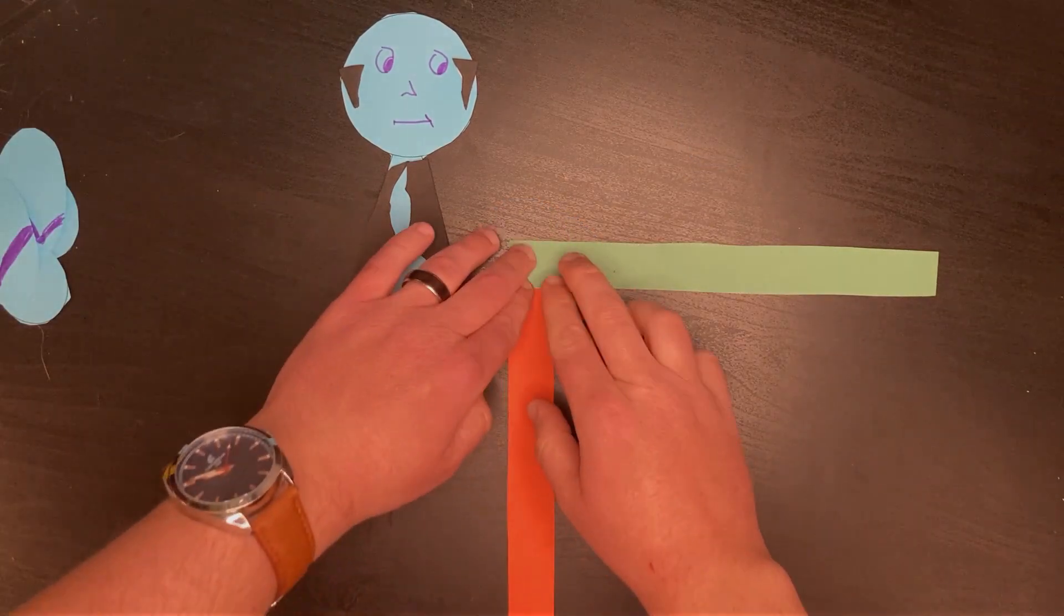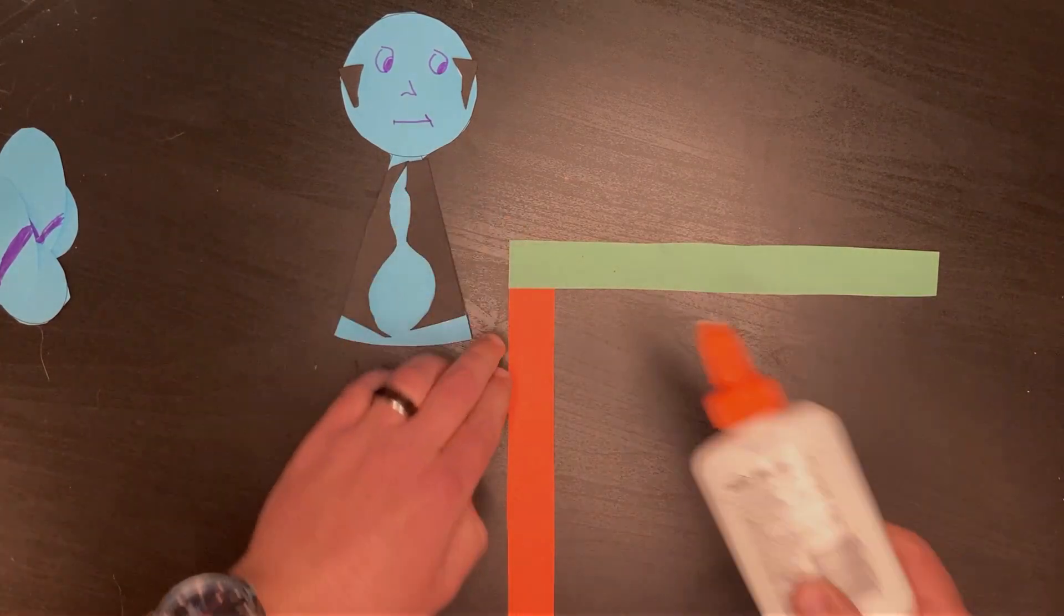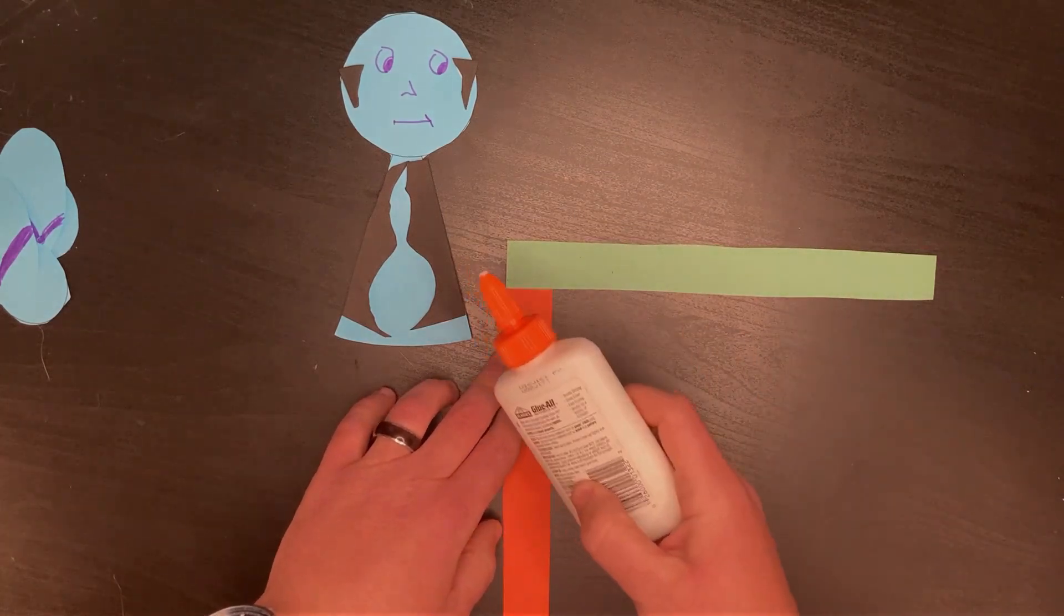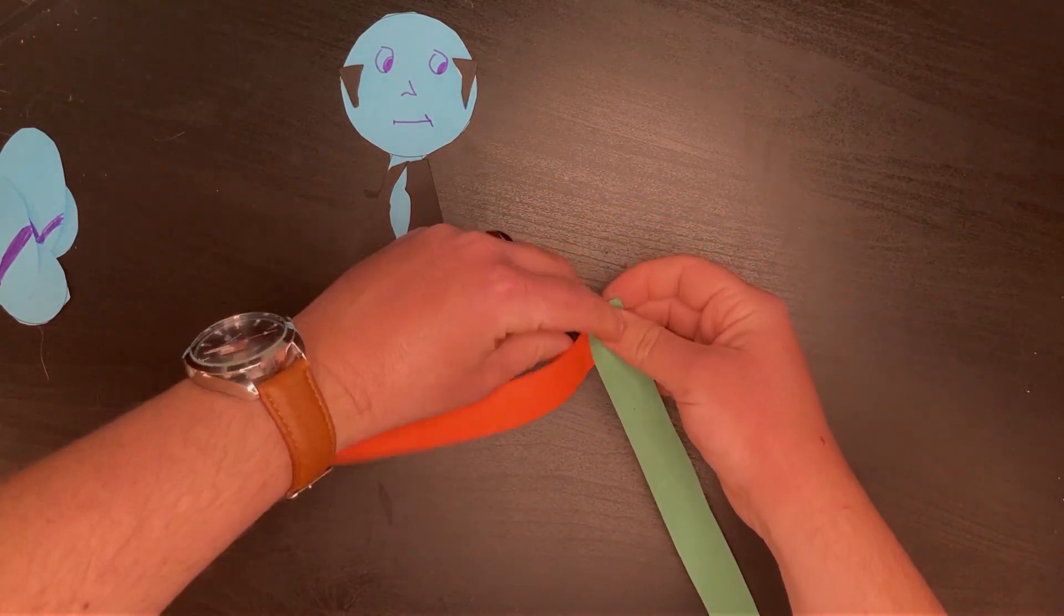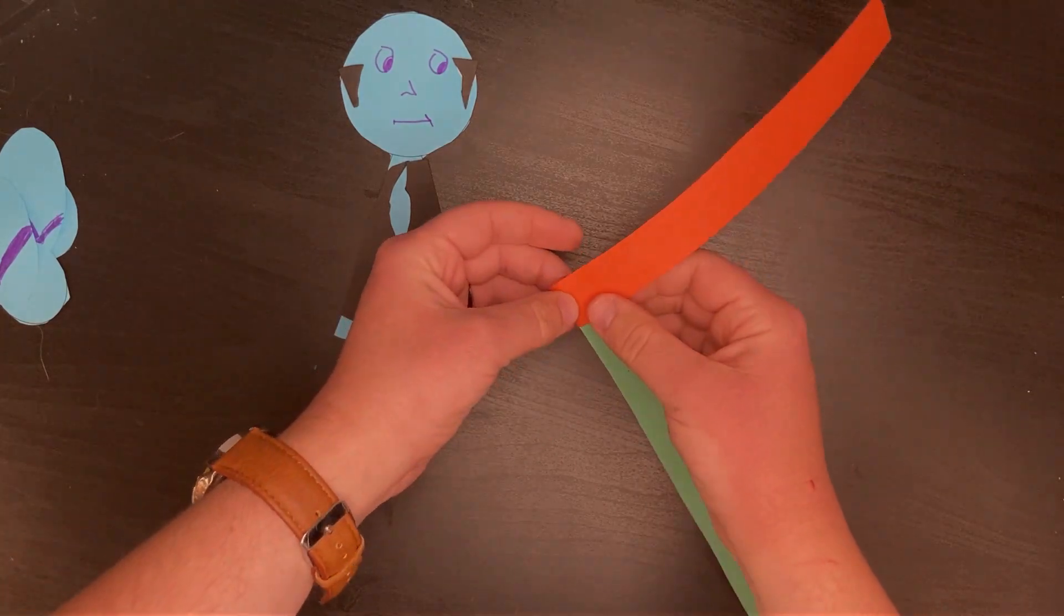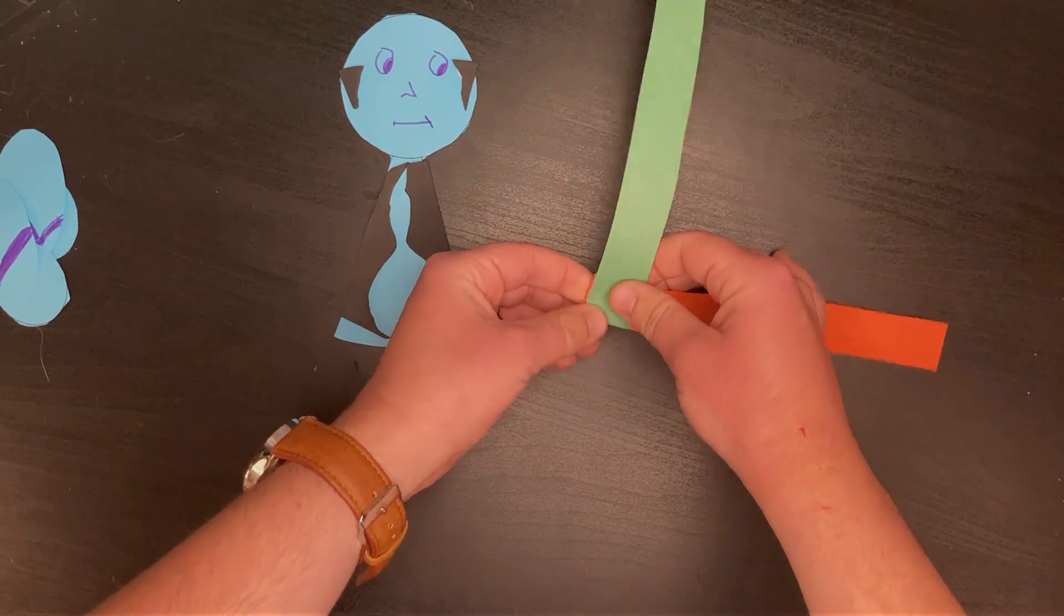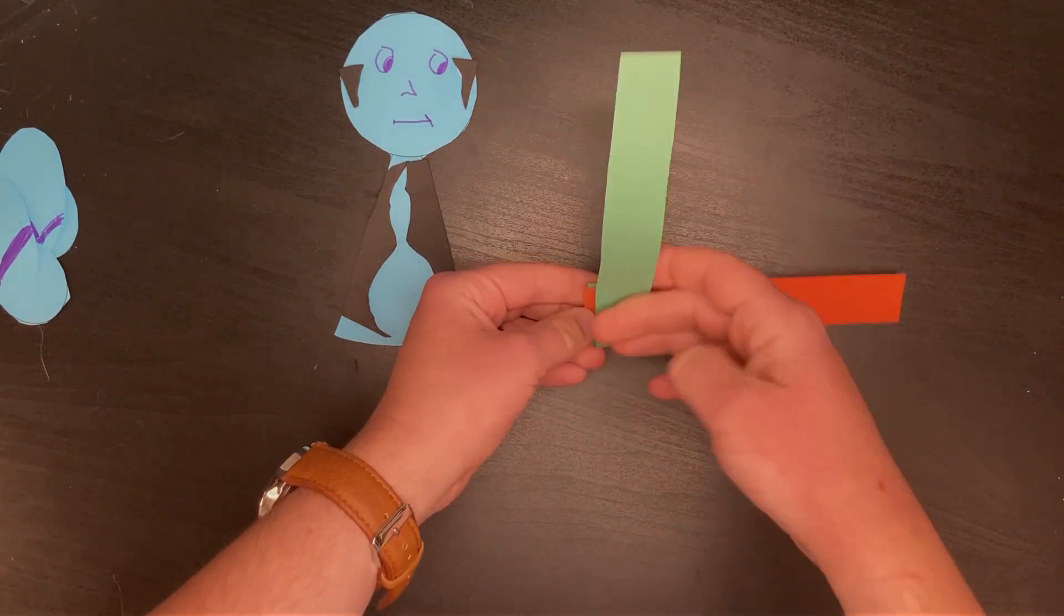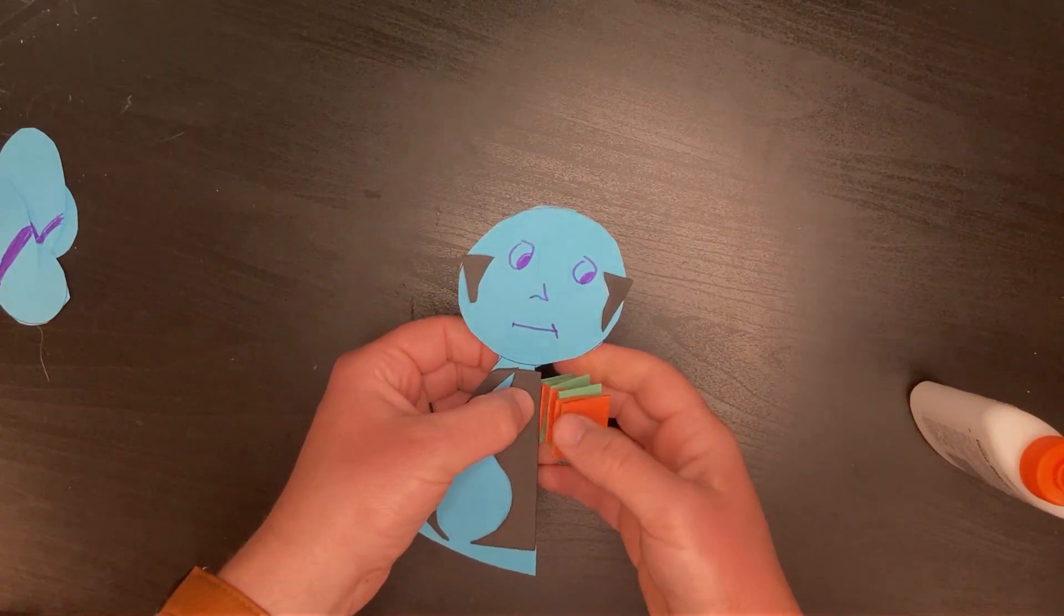But we're going to make foldable springs by laying two strips in opposite directions and gluing them at the corner. Then, take turns folding the pieces one layer over another, back and forth, until they form a single spring. You can use some glue or tape to attach this as an arm or leg.